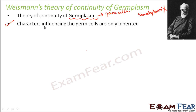This means that only the characters influencing the germ cells are inherited. Characters limited to the germ cells will only get inherited, and the body cells or somatic cells have nothing to do with inheritance.